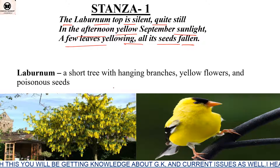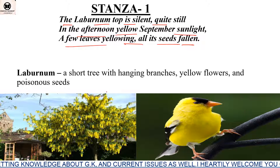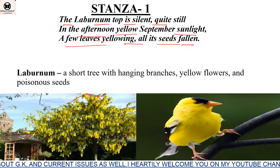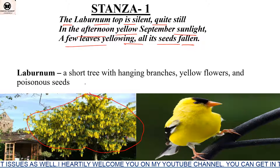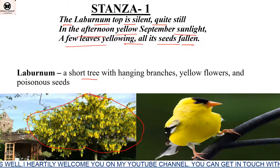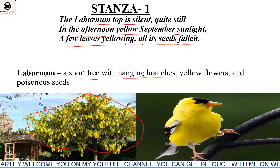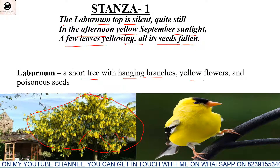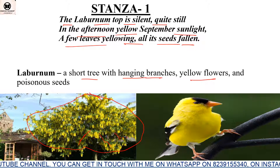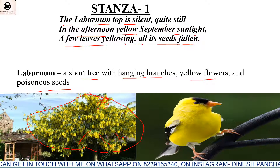First let us look at the Lebanon tree — how does it look like. You can see the image on the screen. This is the Lebanon tree: a short tree with hanging branches. It has yellow flowers, and its seeds are poisonous.